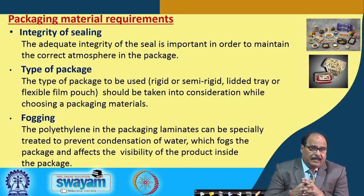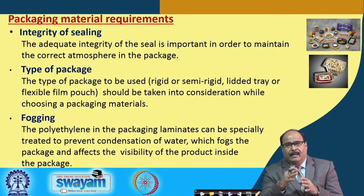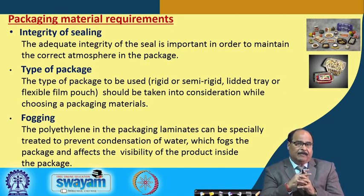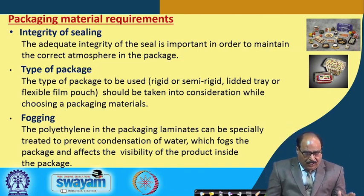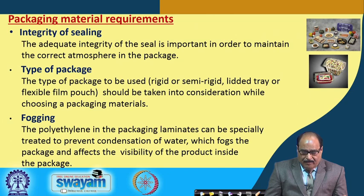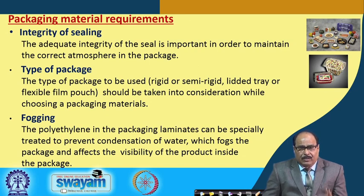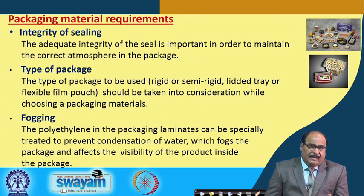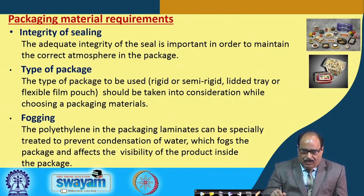Another important property is fogging — the packaging material should not promote or allow condensation of moisture inside the packet, because condensed moisture adversely affects the visibility of the product inside the package, which is not desirable. Packaging materials like polythene laminates can be specially treated to prevent condensation of water to improve visibility, which is particularly important for consumer packs since consumers prefer to visualize the quality and freshness of the food before purchase.